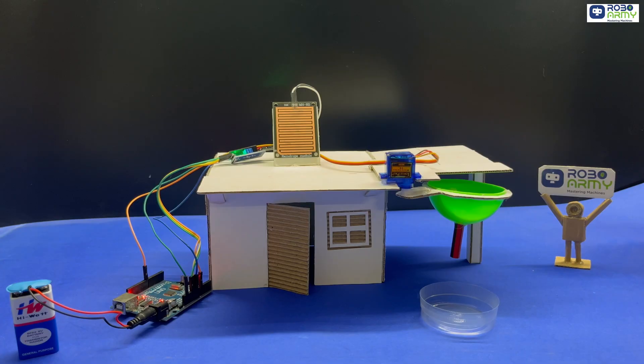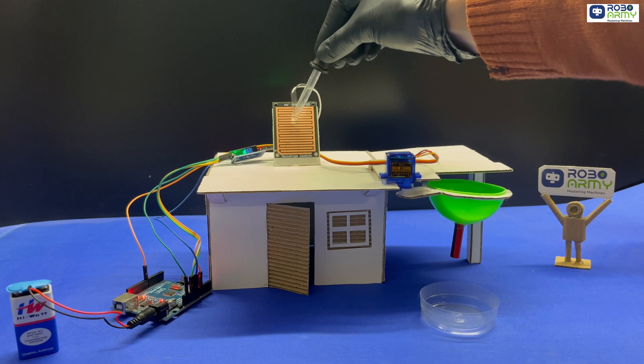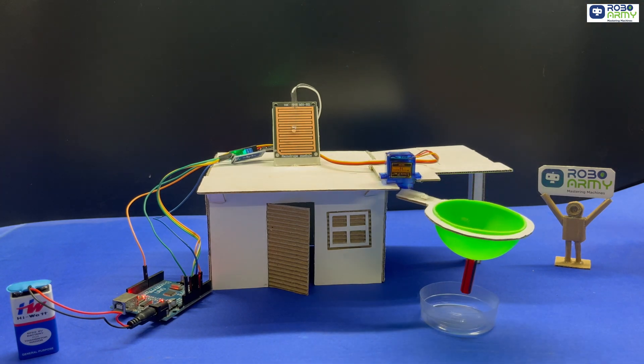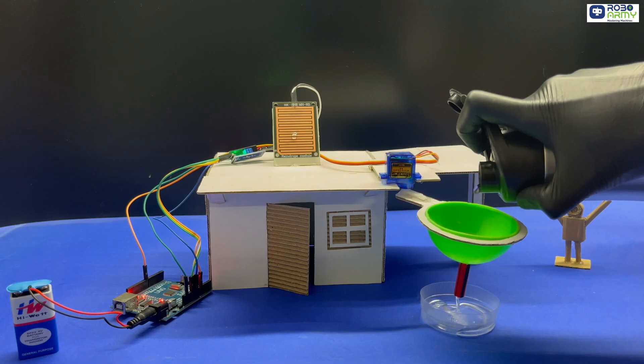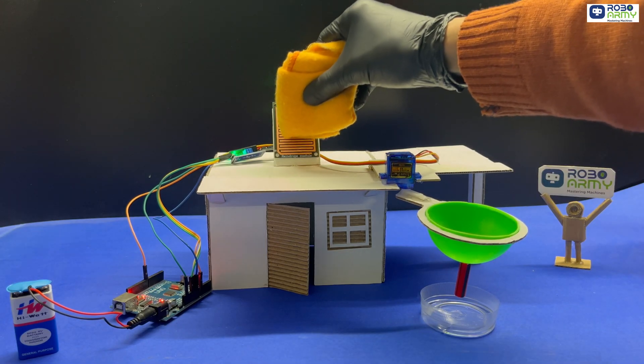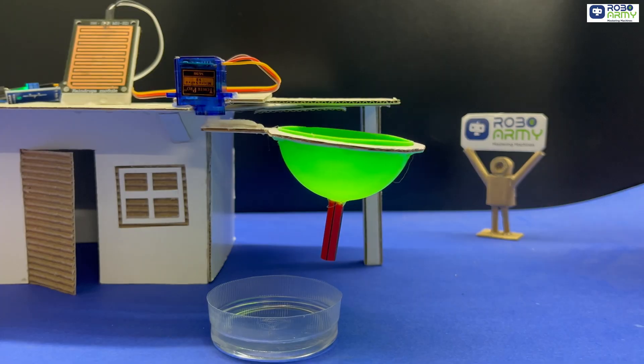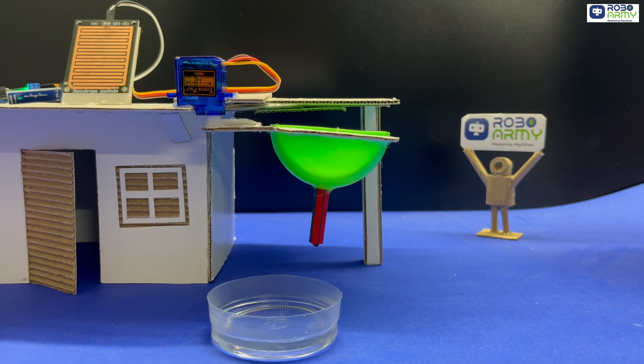When there is no rain, the sensor is dry and the servo keeps the lid closed. When it starts raining, the rain sensor detects water. Arduino sends a signal to the servo which opens the lid to collect rainwater. Once the rain stops and the sensor dries, the servo closes the lid again, automatically.